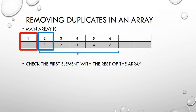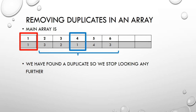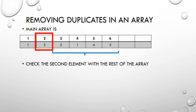So we start with the first one - are one and three the same? No they're not. We are looking for a value that is the same as the value in the red block. Two and one are not the same. When we get to the fourth element in the array, we see they are both ones - we have found a duplicate. When we find a duplicate, we stop looking and move to the next element in the array. We found a duplicate, so we move to the second element, which is three, and compare it with the rest of the array - values at positions three to six.